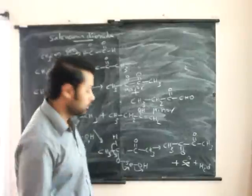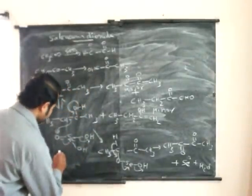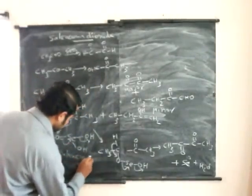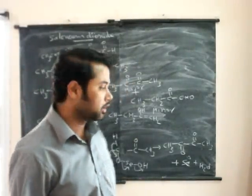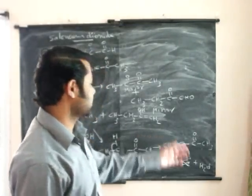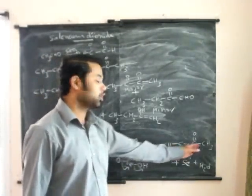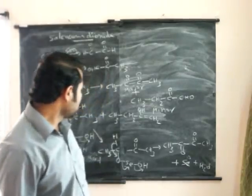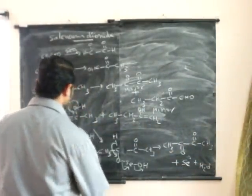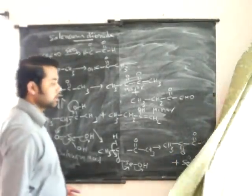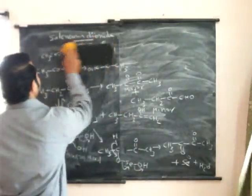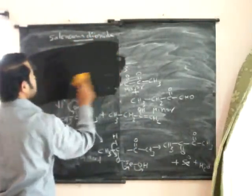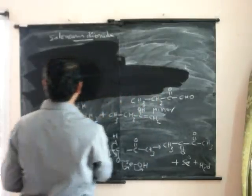This is the second mechanism when we use selenium dioxide without water. When we use water in combination with selenium dioxide, that is the first mechanism to oxidize the keto compound. Now let us see the second mechanism for selenium dioxide when we don't use water along with selenium dioxide.